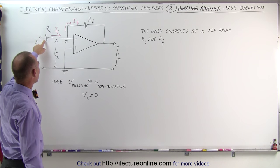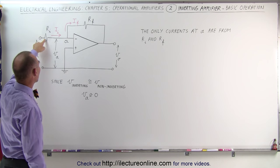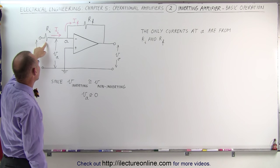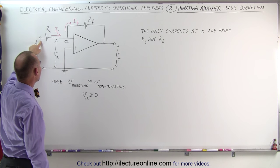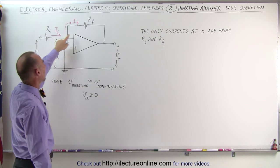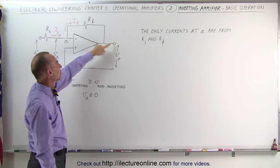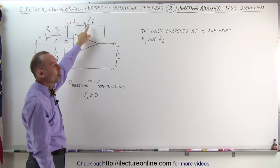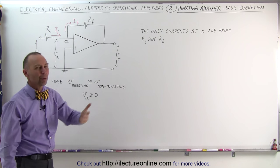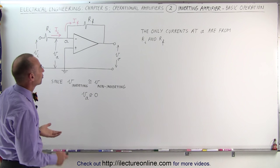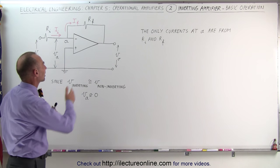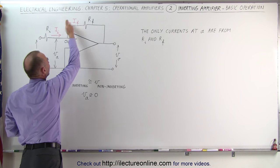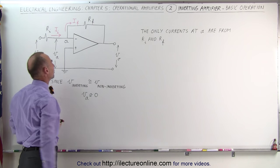Also notice that we have a resistor here called R sub I, which is the resistor on the input signal — we call that the input resistance. And here we have the resistance connected to the output signal, called R sub F for feedback resistor, because it feeds the signal back to the input.